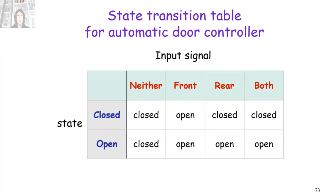Instead of using a graph, we can use a table with two states — closed and open door — and four possible inputs, and define the transitions. For example, if the door was closed and only someone is in the front pad, the door should be opened. Or if the door is open and we have both someone in the front pad and someone in the rear pad, the door should remain open. This transition state is written in the table.